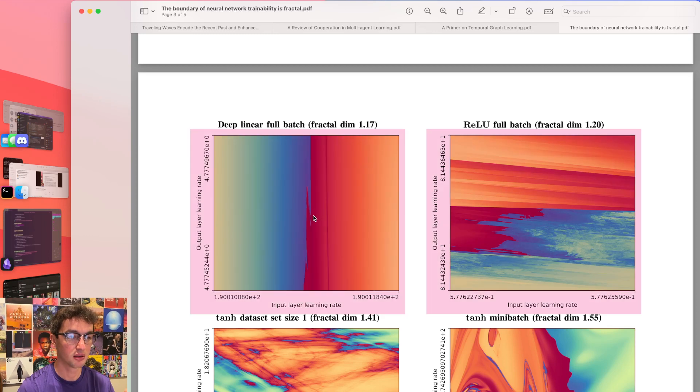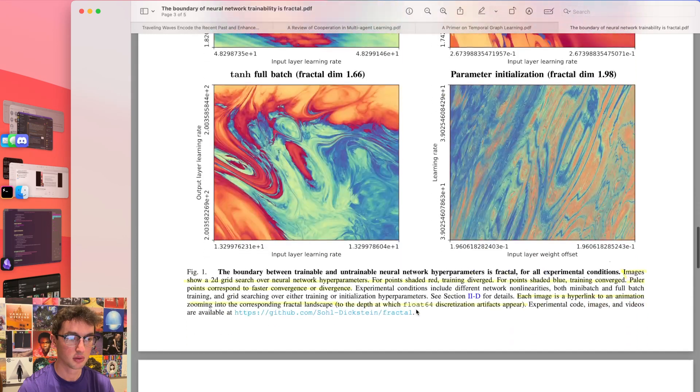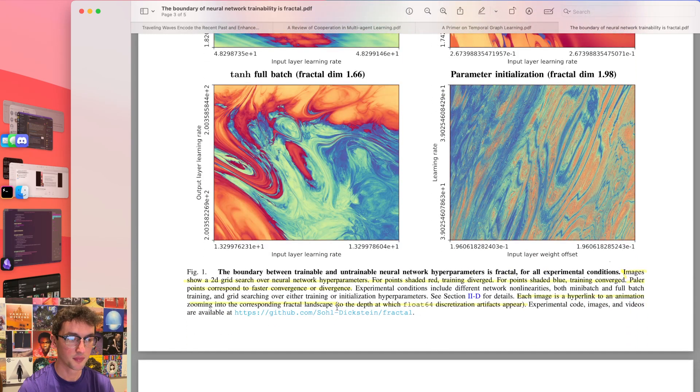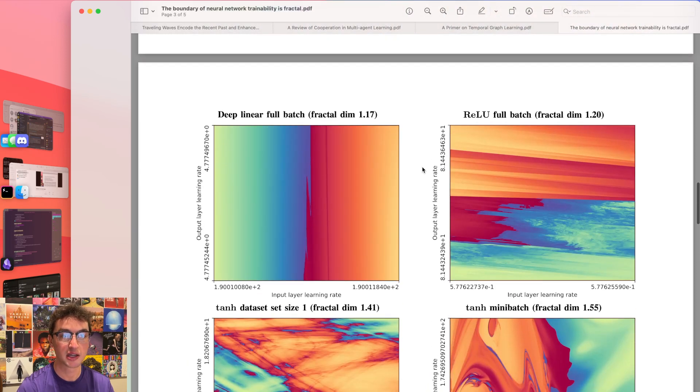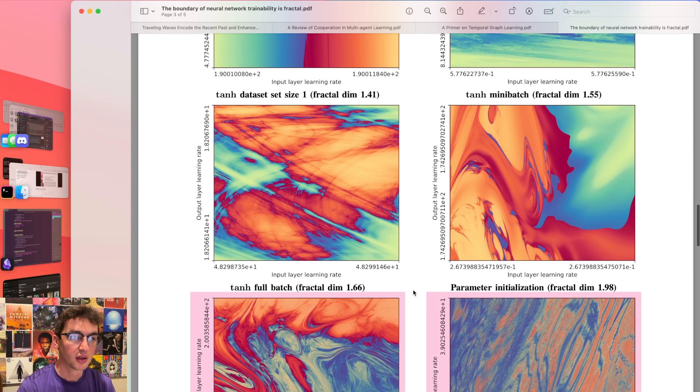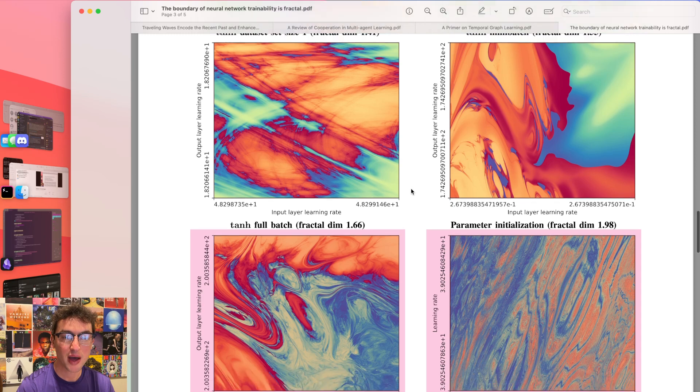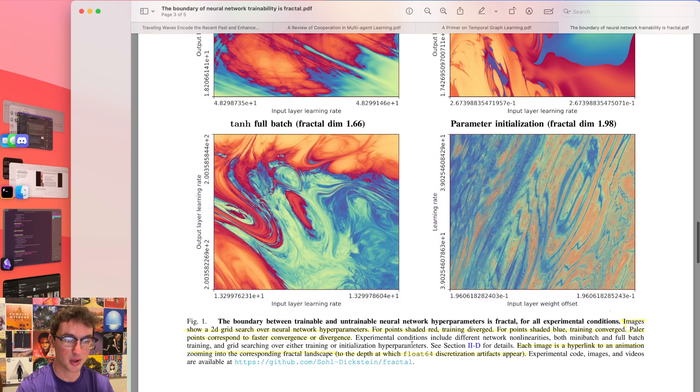And we can explore these. They're actually hyperlinks, I think. How do I, can I go to this hyperlink? Is it not going to let me? So each image is a hyperlink to an animation zooming into the corresponding fractal landscape. Okay, there's other ones here. We'll look at the actual displays in a second. They're very pretty. What else we compare? Output layer learning rate versus input layer learning rates. Some of them have full batch, some mini batch. It's a bunch of comparisons, right?